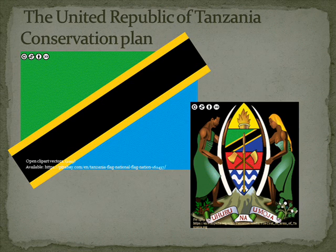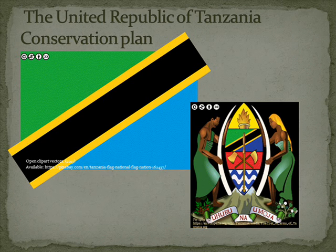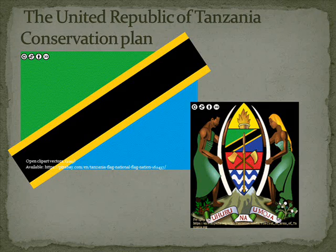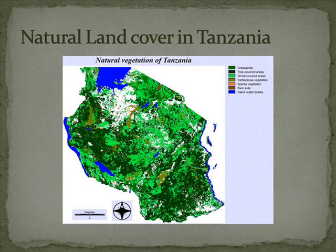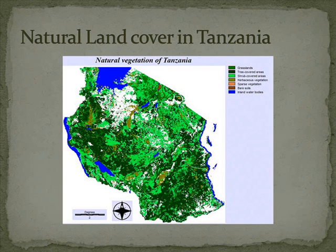The United Republic of Tanzania is a country in central east Africa, close to the equator. The country is surrounded by ocean on the east, Kenya in the northeast, Uganda in the north, Rwanda and Burundi in the northwest, a small portion of Zambia in the southwest, and lastly Mozambique in the south. This country is approximately 947,303 kilometers squared.